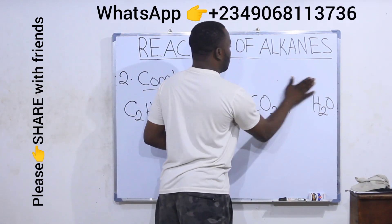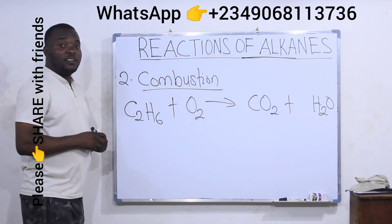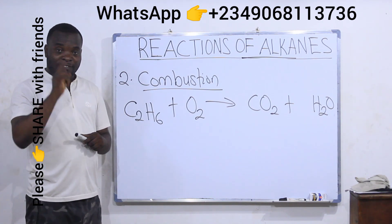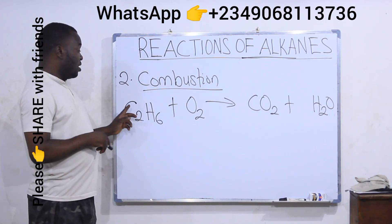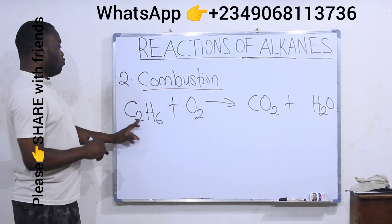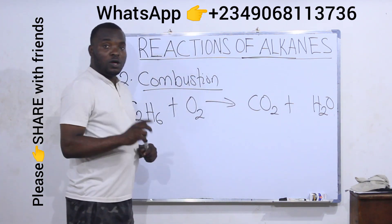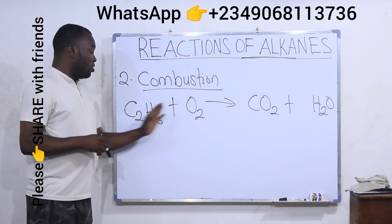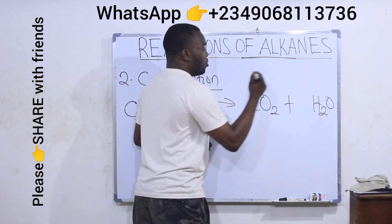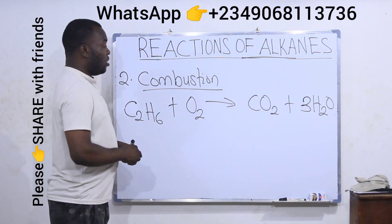Let's balance the equation for the combustion of ethane. Remember: balance carbon first, balance hydrogen second, balance oxygen last. On the left I have two carbons; on the right I have only one carbon — so I put two here. On the left I have six hydrogens; on the right I have two, so I'll put three here so that three times two gives me six.